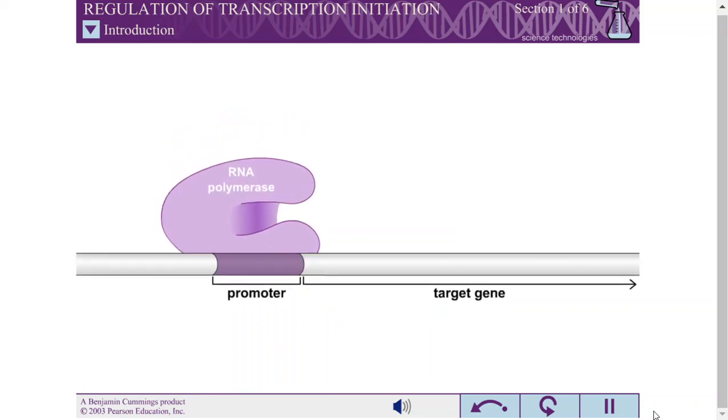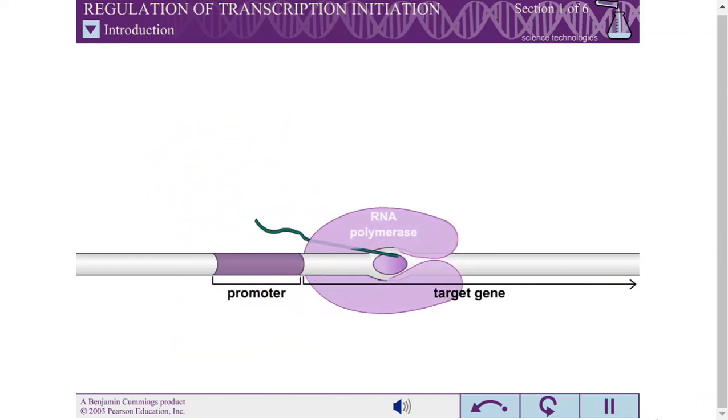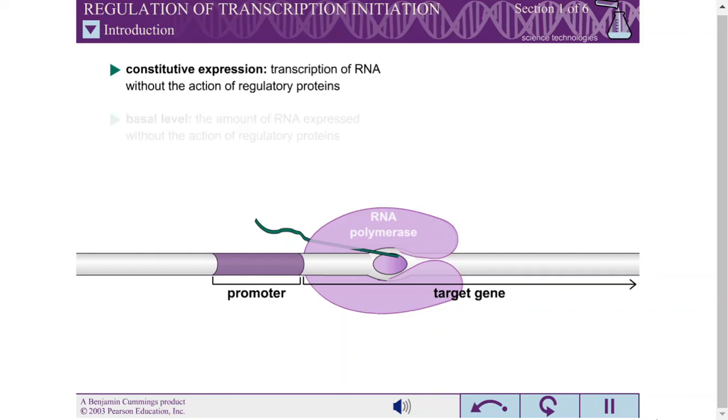Many promoters are imperfect. In the absence of regulatory proteins, RNA polymerase binds only weakly. Occasionally, RNA polymerase is able to successfully bind to these promoters and produce an open complex, leading to a low level of constitutive expression called the basal level.